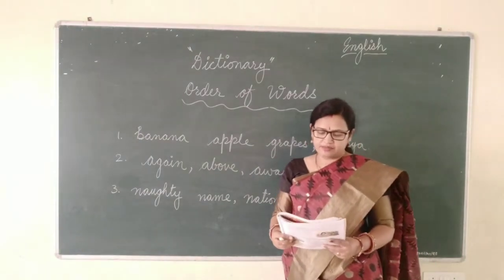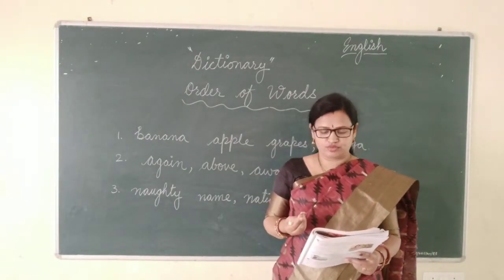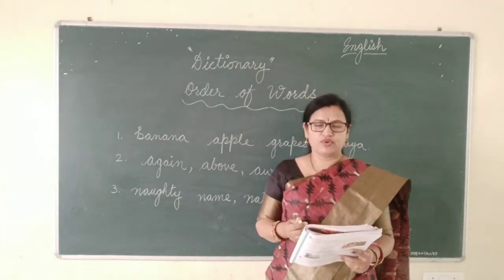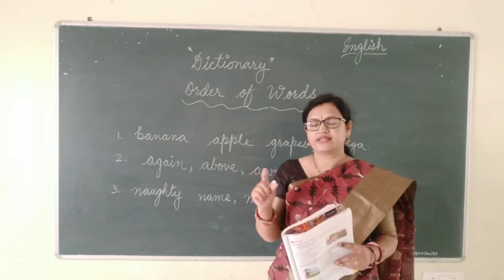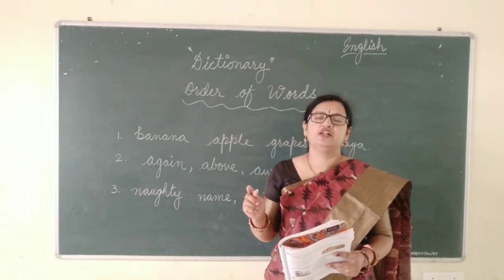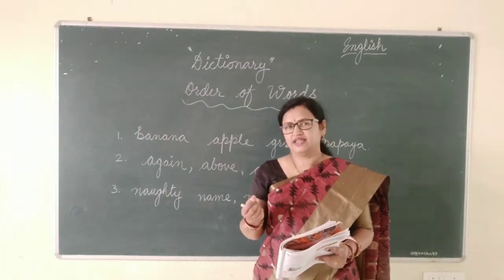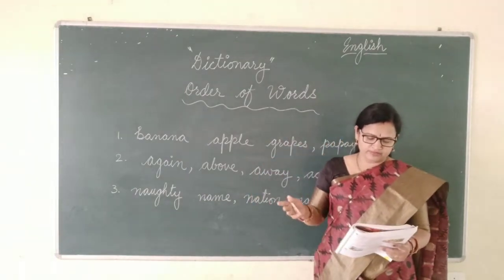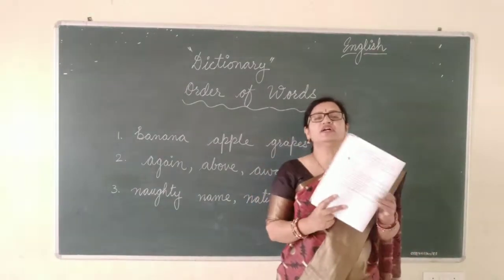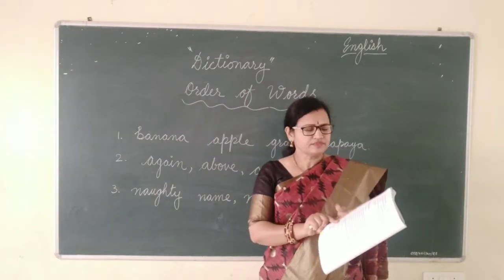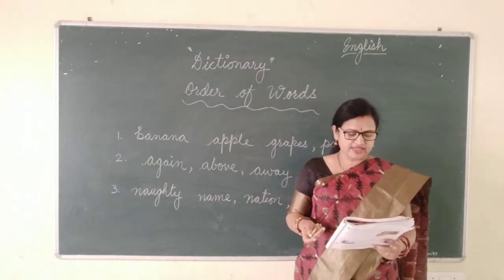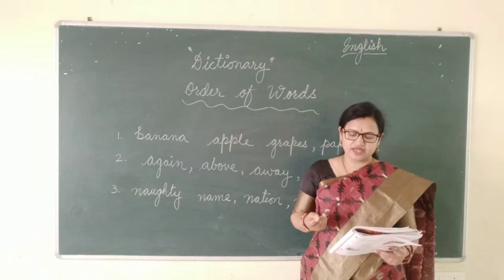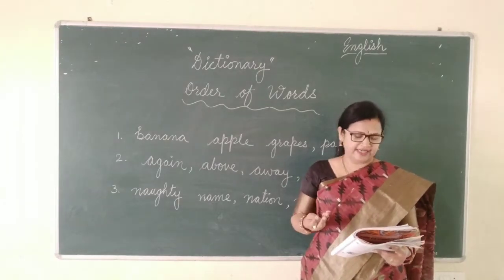Sometimes we need to look at the second letter also. The words are arranged in alphabetical order by the second letter as well. In the dictionary, whatever word is given, they are arranged in alphabetical order so that you may find the word easily. For example, in the following words given in your textbook page number 94, they have given order of words in which the words have been arranged by the second letters.